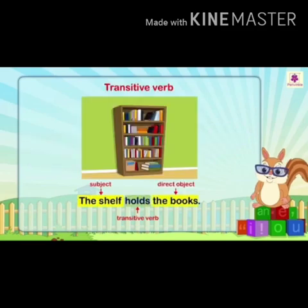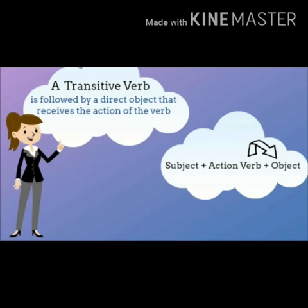Example of transitive verb: 'The shelf holds the books.' In this sentence, 'shelf' is the subject, 'holds' is the transitive verb, and 'books' is the direct object. Moreover, a transitive verb is followed by a direct object that receives the action of the verb.